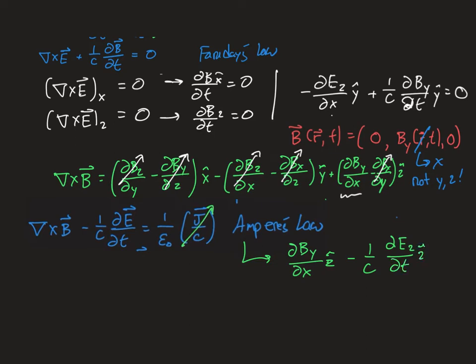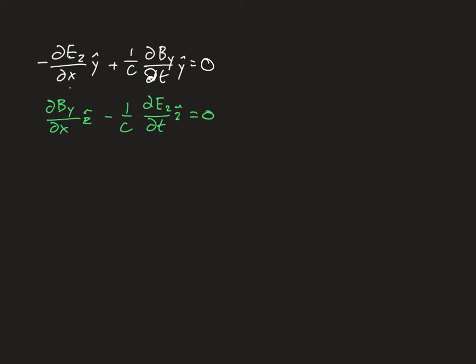Out of Ampere's law we get just two terms: the derivative of By with respect to x minus one over c times the time derivative of Ez, all in the z-hat direction, equal to zero — because in the source-free region Ampere's law says that combination equals zero. I'm going to put these two equations onto a clean sheet. They are vector equations: one is only true in the y direction and the other only in the z direction.